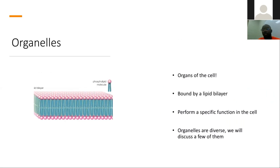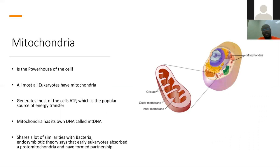The organelles of a cell are analogous to the organs inside humans. These organelles are bound by a lipid bilayer, which facilitates communication within adjacent cells or organelles and interaction with proteins. The first organelle to consider is the mitochondria — the powerhouse of the cell — which supplies ATP as energy to power the cell, analogous to the electrical supply for your home appliances.